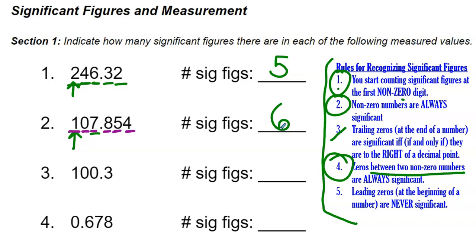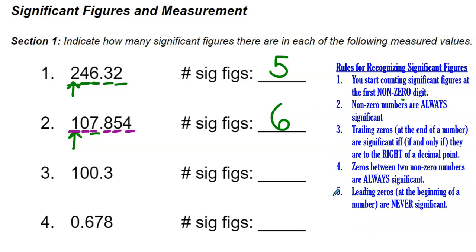Number three has zeros again. These zeros are between two non-zero numbers — the one and the three — so rule four applies and they are always significant. Even though the zeros are right next to each other, both are sandwiched between non-zero numbers. We start counting at the first non-zero number, which is the one, and count to the end: one, two, three, four significant digits.